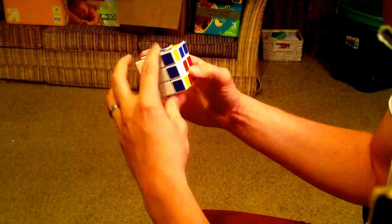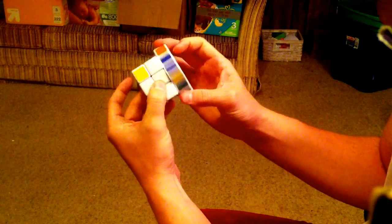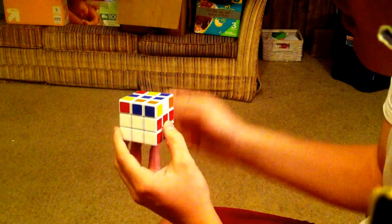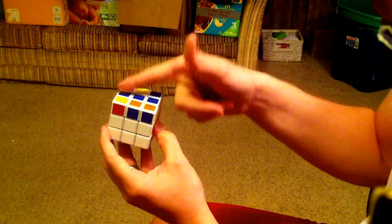You need it so that the blue L is facing like this, and you're going to apply the algorithm again. So, F, R, U, R prime, U prime, F prime. Now, we have the L. Now, we have the bar.